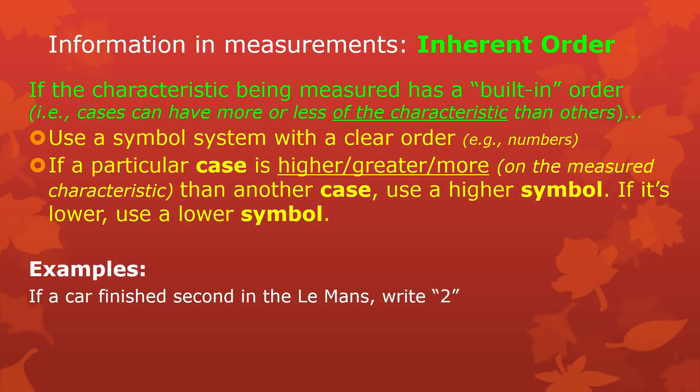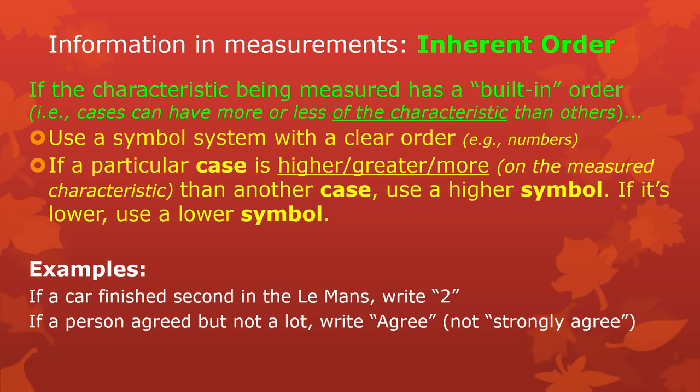Here are some examples. If a car finished second in the Le Mans, write 2 for second place — though remember, in this case second place is not as good as first place, even though the number is bigger. If a person agreed with a statement on a survey but not a lot, maybe write 'agree'; if they strongly agreed, 'strongly agree'; if they disagreed a little, write 'disagree.'